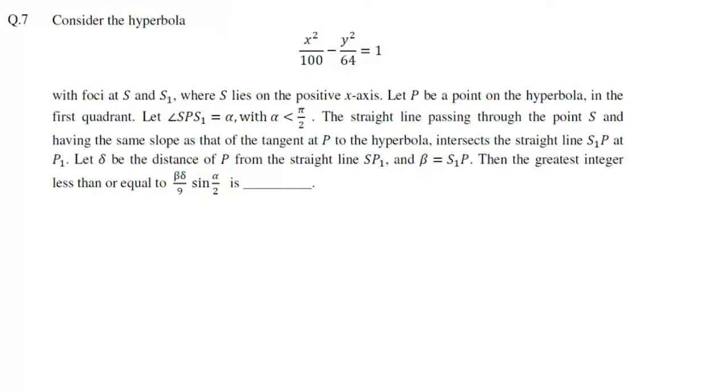At question number 7, we are given a hyperbola for which a is 10 and b is 8. It says its foci are at s and s1, where s lies on the positive x-axis, and p is a point on the hyperbola in the first quadrant.